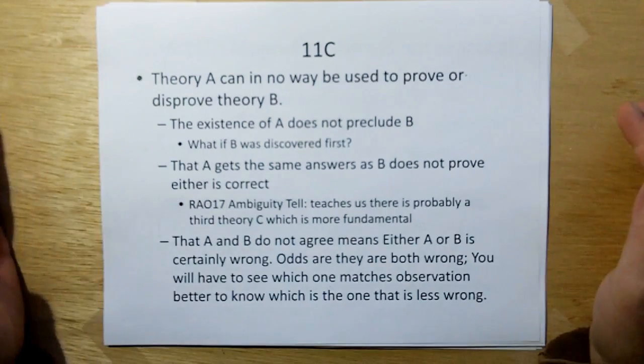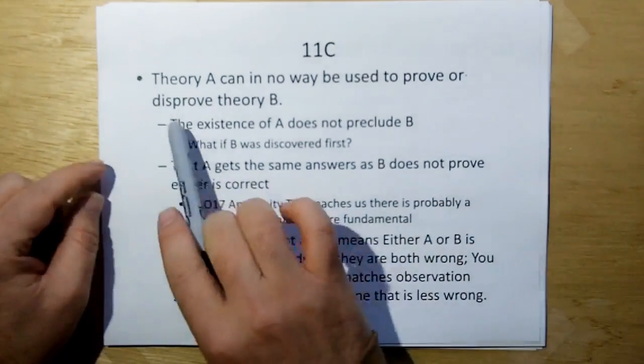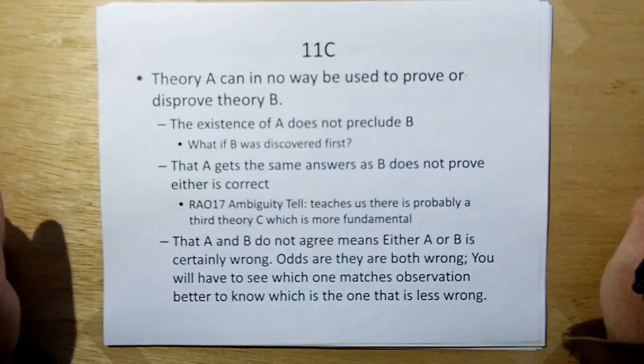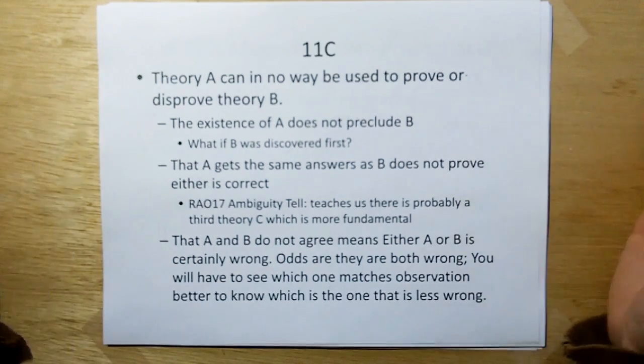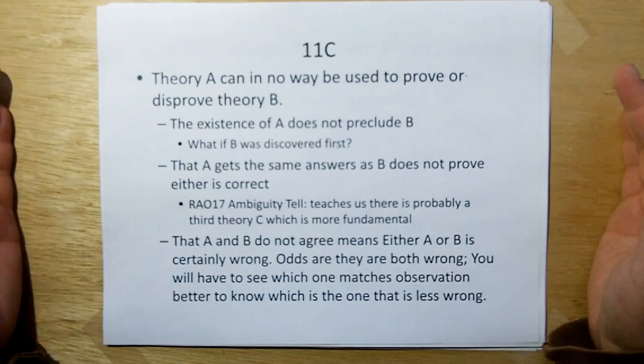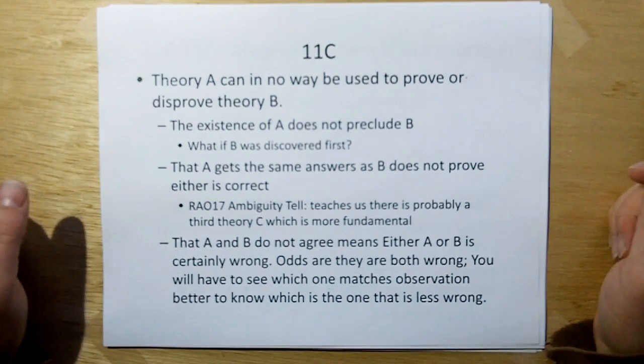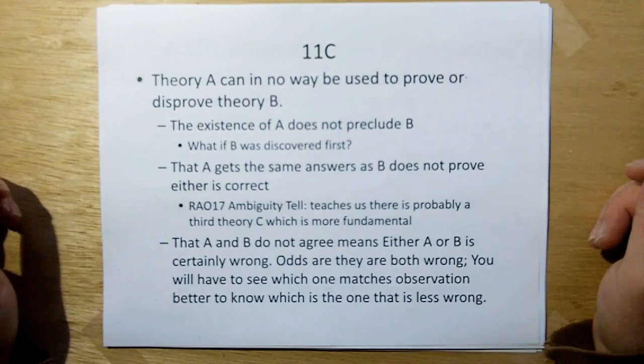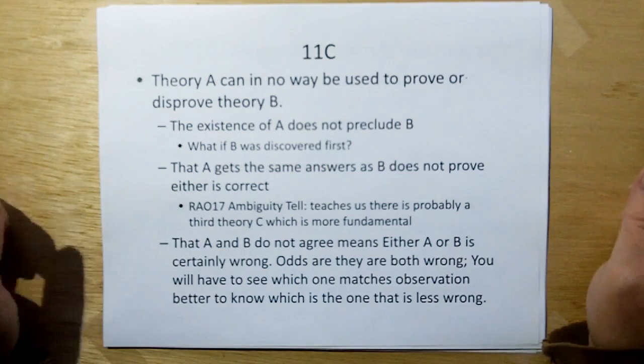And therefore, this leads us to rule of acquisition 11C, which is based on 11B. It says theory A in no way can be used to prove or disprove theory B. In other words, the existence of A does not preclude B because what if B were discovered first? If new electromagnetism was discovered first and this chump named Maxwell came into Fairfield University and said to the dean, well, I got these new models, the dean would probably say, well, no, new electromagnetism is irrefutable.